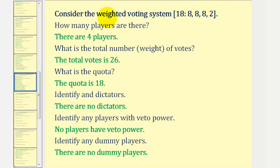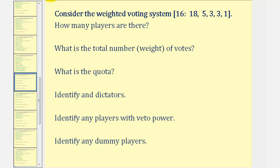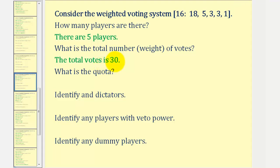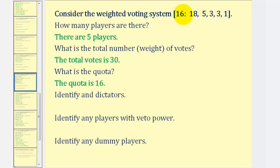Let's take a look at another example with the same questions but a different weighted voting system. Again, the first question is how many players are there — there are five players. The total number of votes or weight would be 18 plus five plus three plus three plus one, which would be 30. The quota is to the left of the colon, so the quota is 16. Notice in this system we do have a dictator — player one has a weight greater than or equal to the quota of 16, so player one is a dictator.